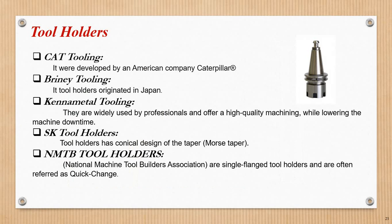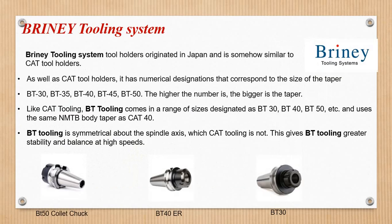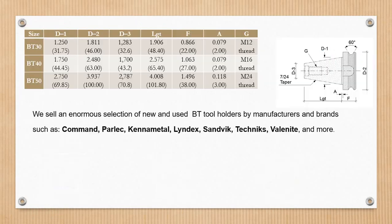Next is tool holders. This covers cutting tools and tool holders. CAT and BT tooling: Kennametal, SK tool holders, NMTB, and BT tooling. These are different structure standards.